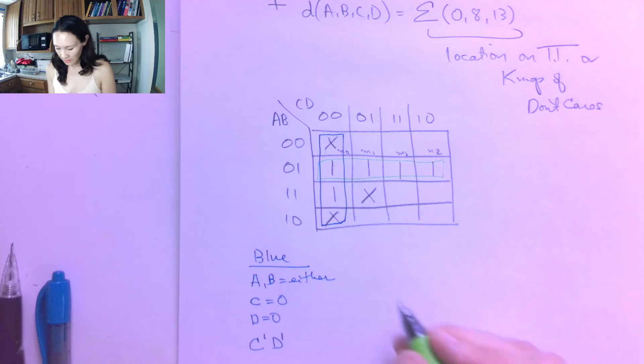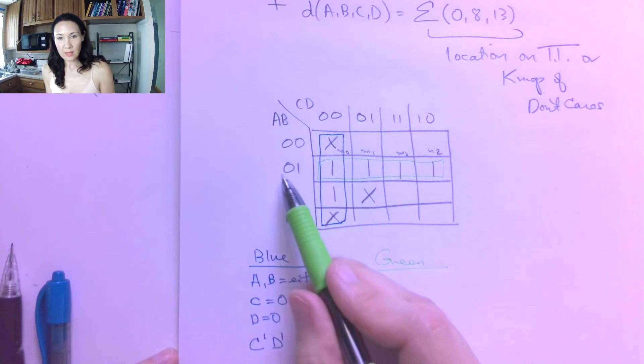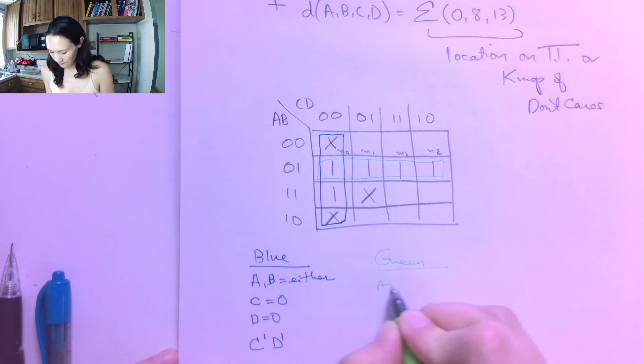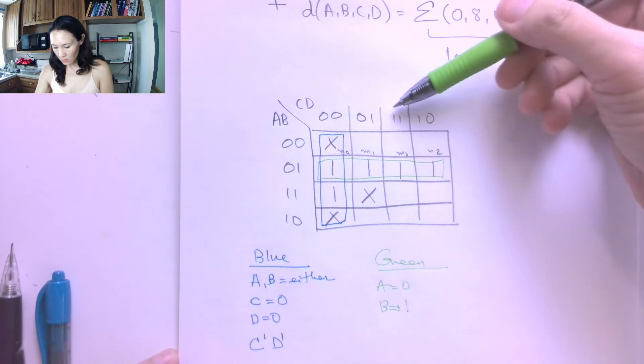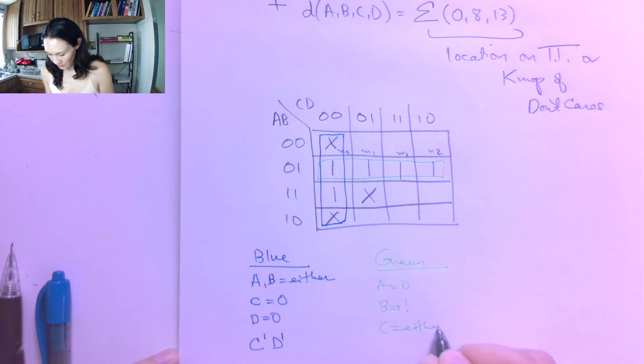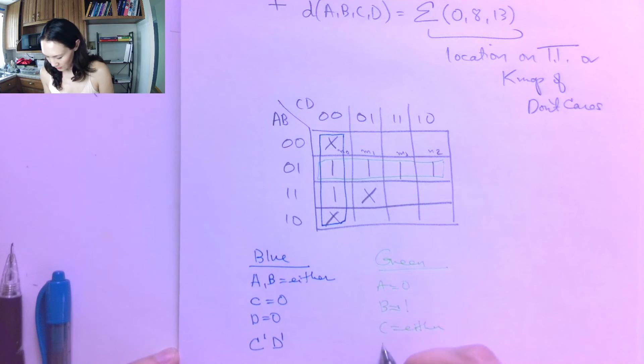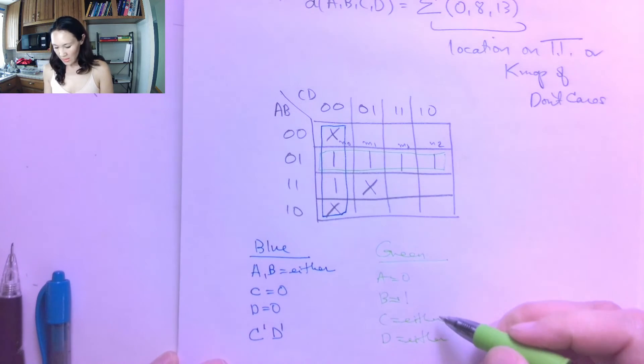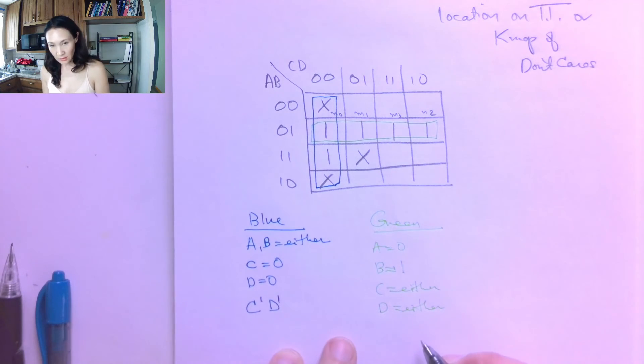So then my green grouping, to give me this row of 1s, A is 0 and B is 1. And then C can be either 0 or 1, and I'll get these 1s. So C is either. And D can be either 0, 1, 1, 0, and we'll get 1. So D can be either also. So any time we have a literal can be either 0 or 1, that means we can reduce it out of the function because it doesn't contribute. It doesn't matter. So what does matter is that A has to be 0 and B has to be 1.